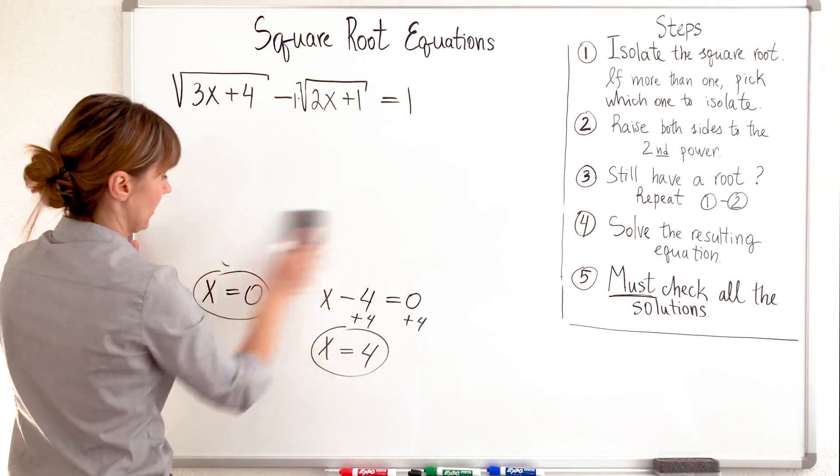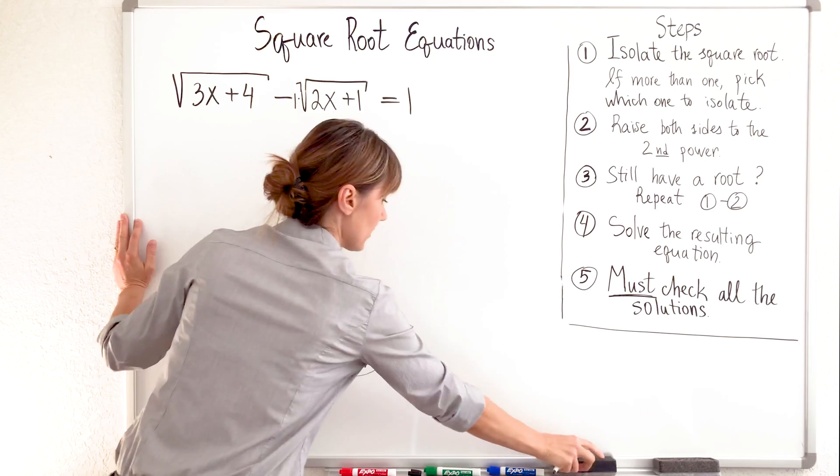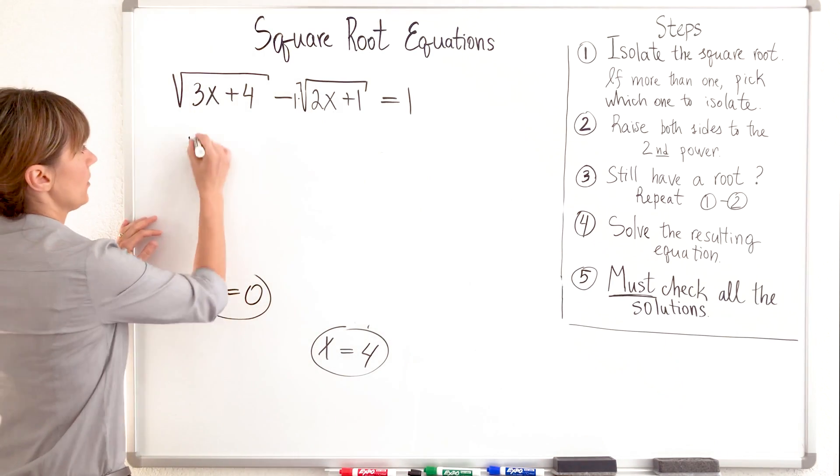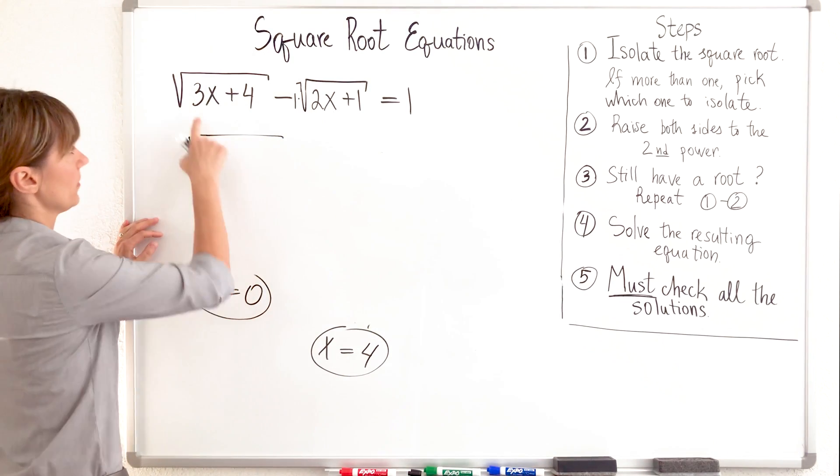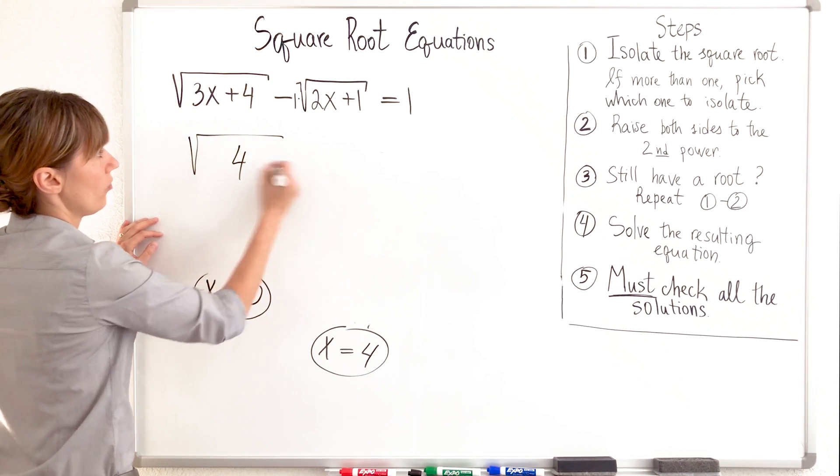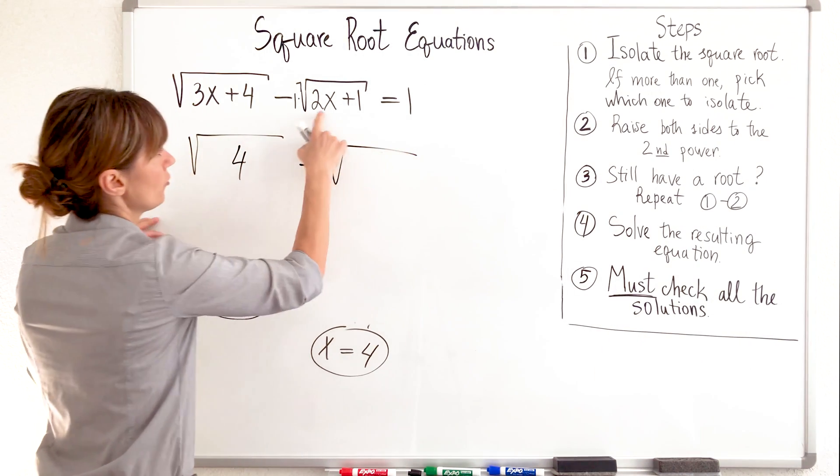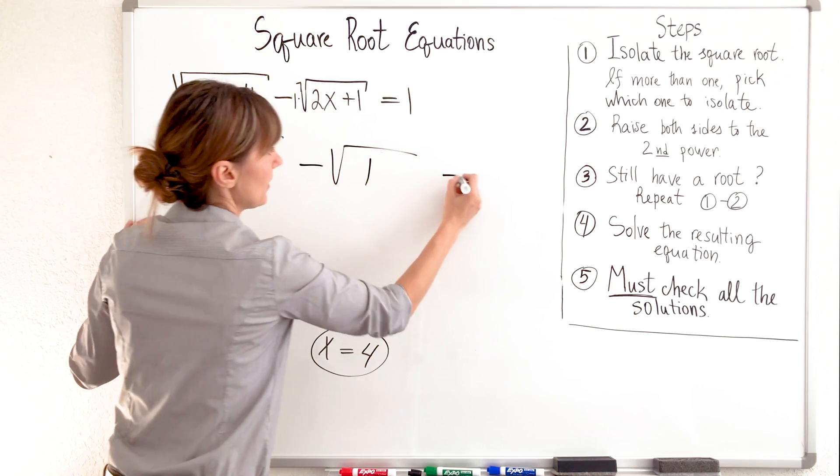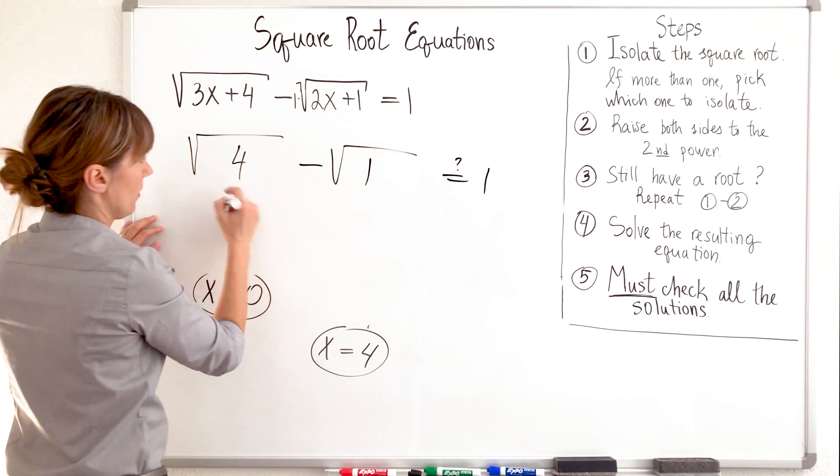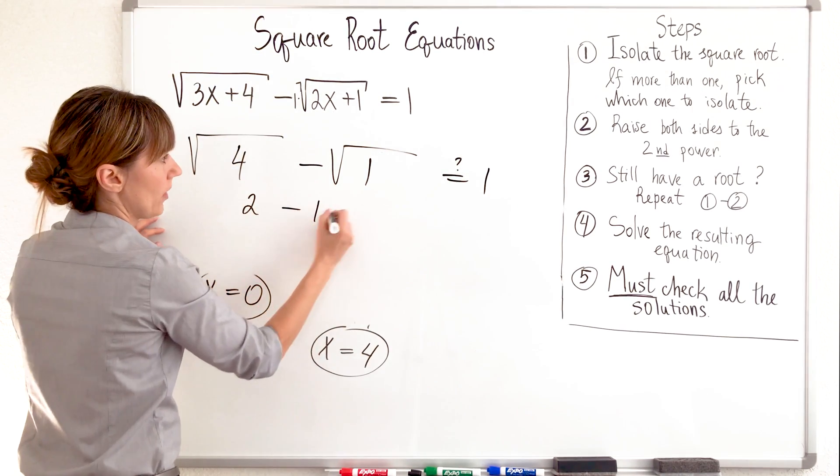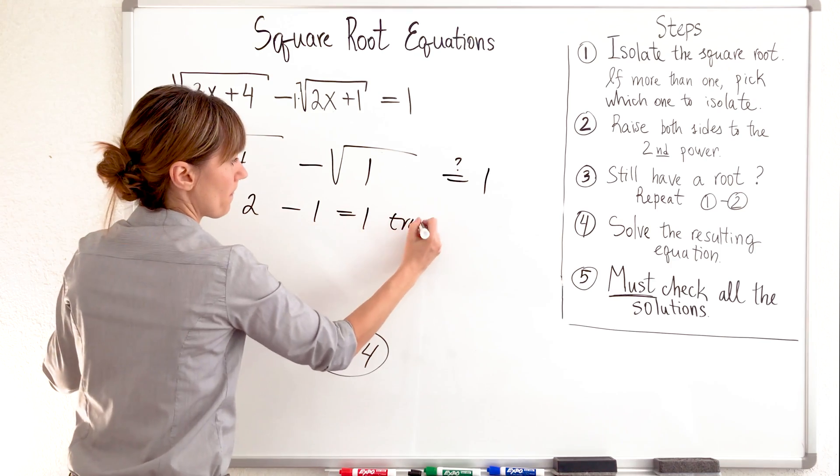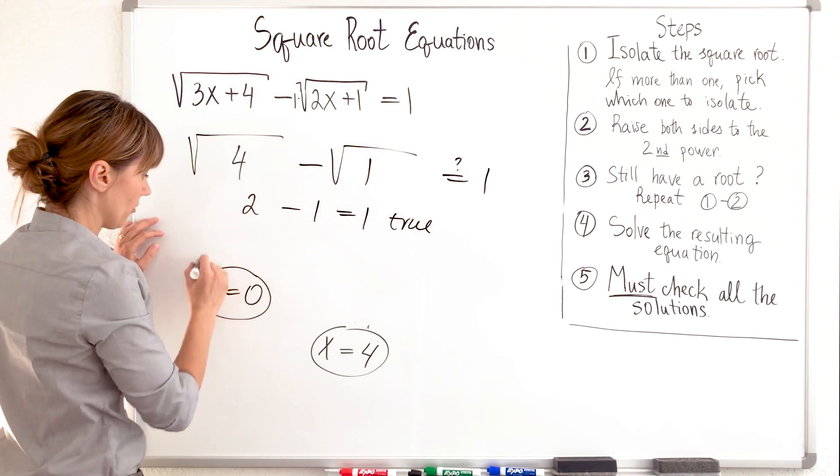Okay, at least we have x equals 0, which is easy. So let's go. Grabbing 0, 3 times 0, 0 square root of 4 minus 2 times 0, 0 square root of 1 is it 1. Square root of 4 is 2, minus 1, it is 1. True. This guy checks out. Nice.